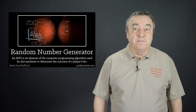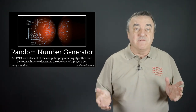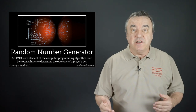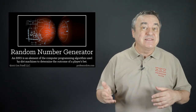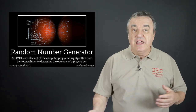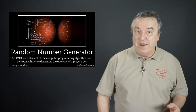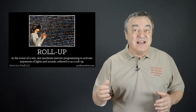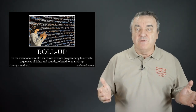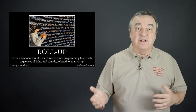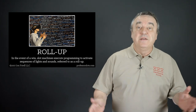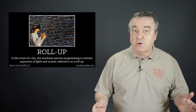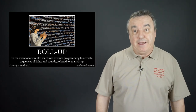Pseudo-random number generator, PRNG: an element of the algorithm used by a slot machine to determine the outcome of a player's bet based on the predetermined odds of winning as set by the casino operator. Roll-up: when a jackpot is won, a slot machine can emphasize the win by making sound effects to signal the counting of credits won. This roll-up can be halted by pressing most buttons on the slot machine console, including making the next bet.